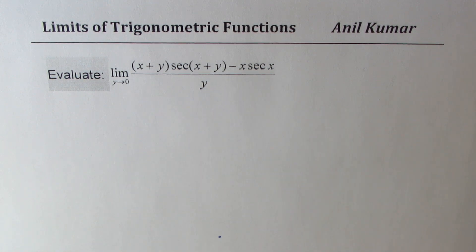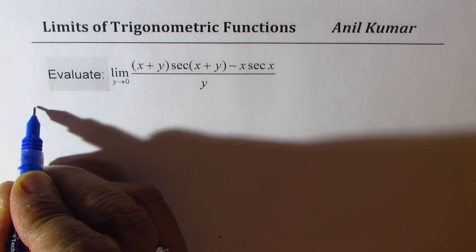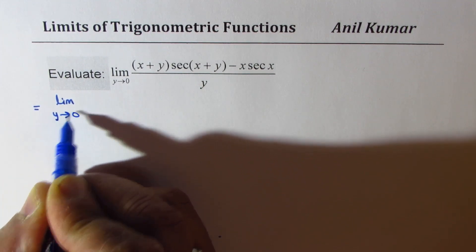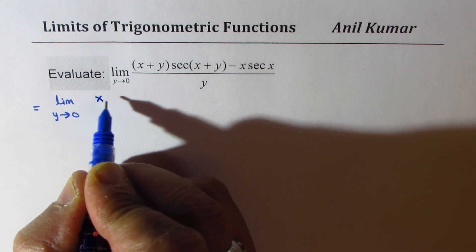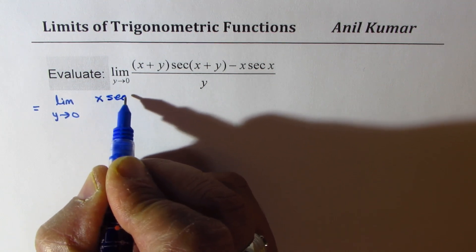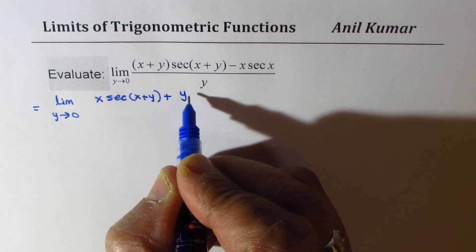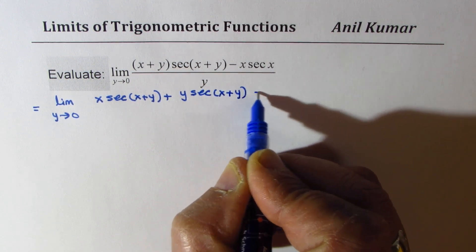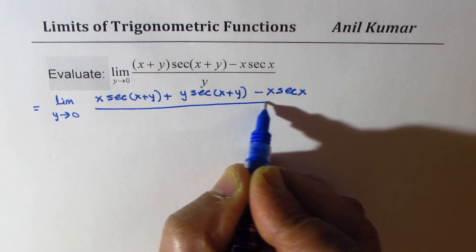You can always pause the video, answer the question, and then look into my suggestions. Now let's try to simplify this expression we are given, limit y approaches 0. Let's apply the distributive property here, multiplying by x we get x secant x plus y plus y times secant x plus y minus x secant x, everything divided by y.